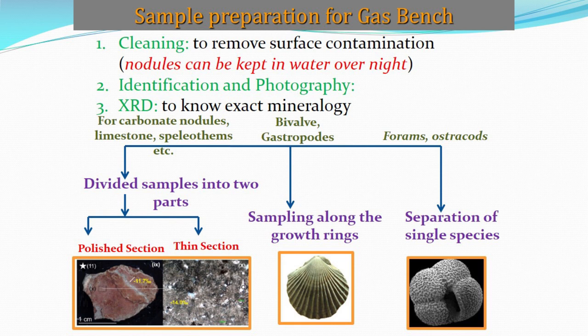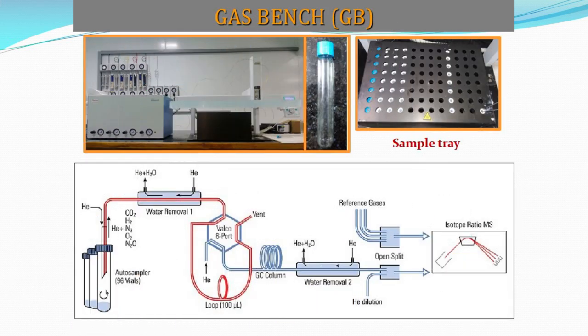After studying the thin section, we take powder from the polished section through a dental drill or micro mill for isotopic analysis. In the case of gastropod we do sampling along the growth ring of the sample. For foraminifera or ostracod samples, we separate single species samples. After preparation, we keep all these samples in separate vials one by one and keep all these vials in the gas bench in a systematic manner. With the help of a needle we flush out all the atmospheric gases from these vials and then we add acid. We usually give two hours of reaction time and then measure the isotopic composition of the CO2 gas.